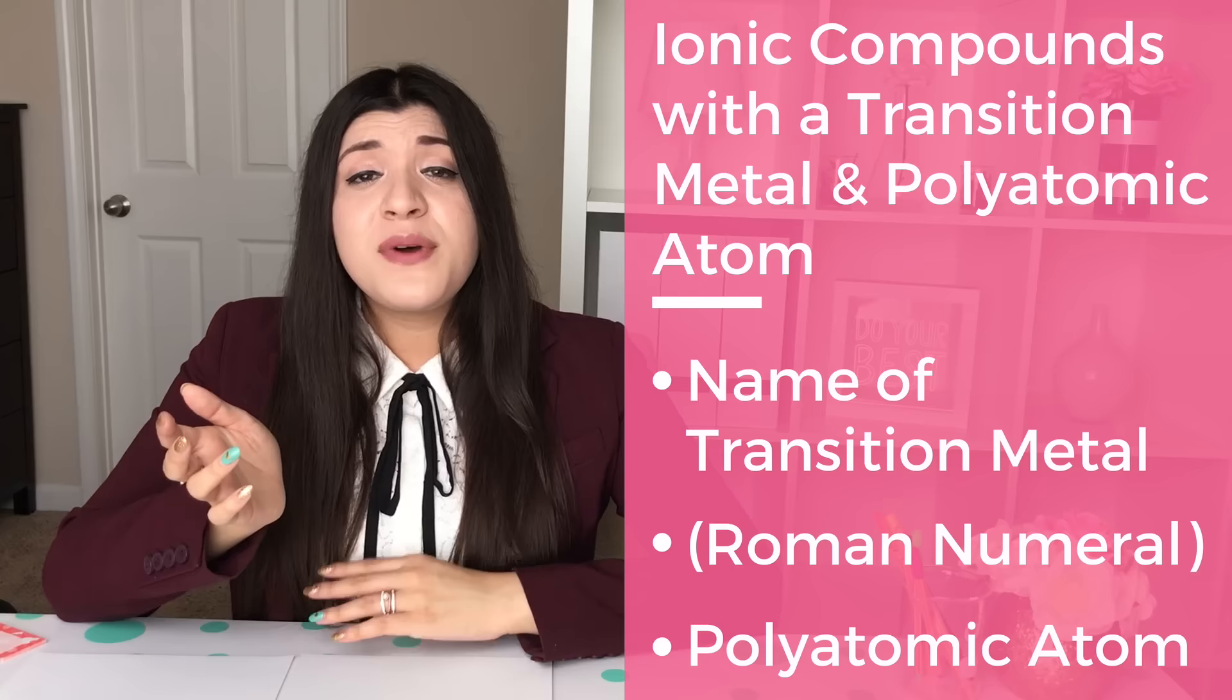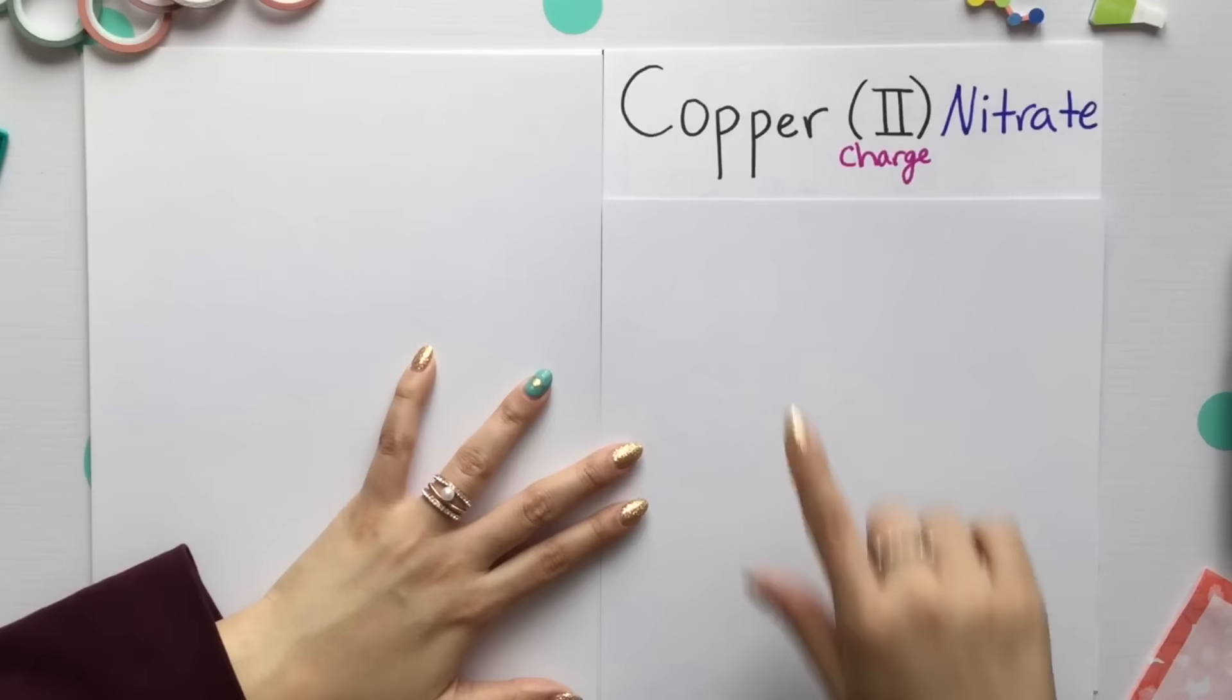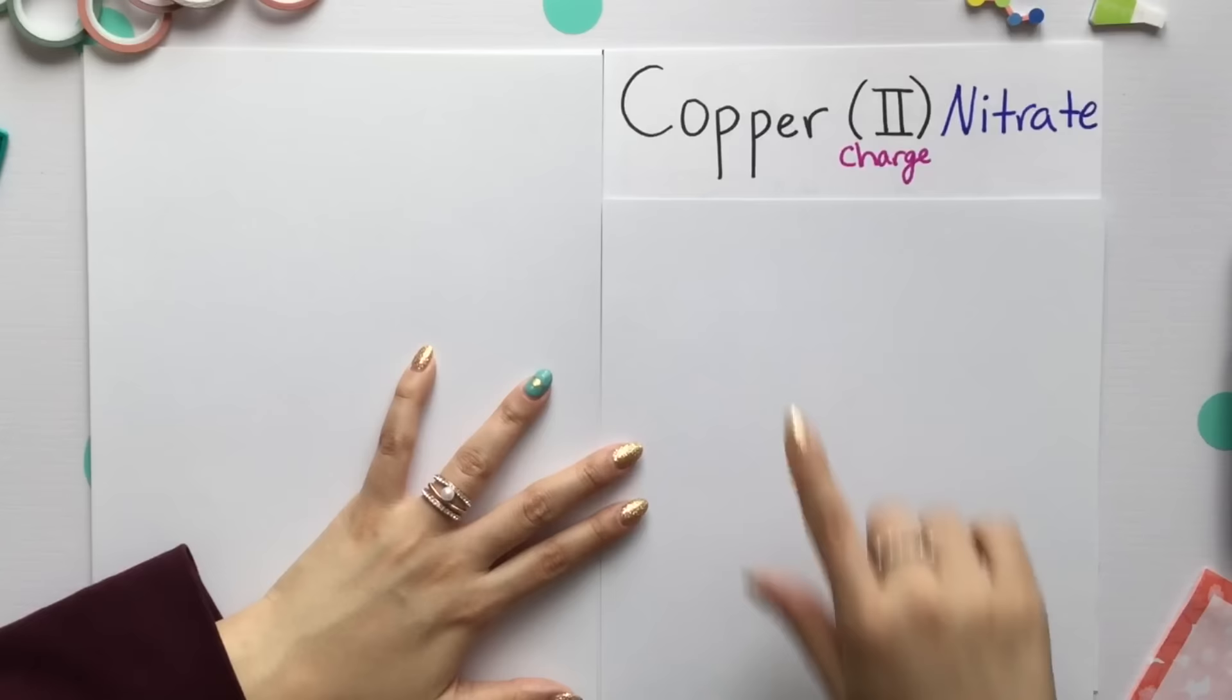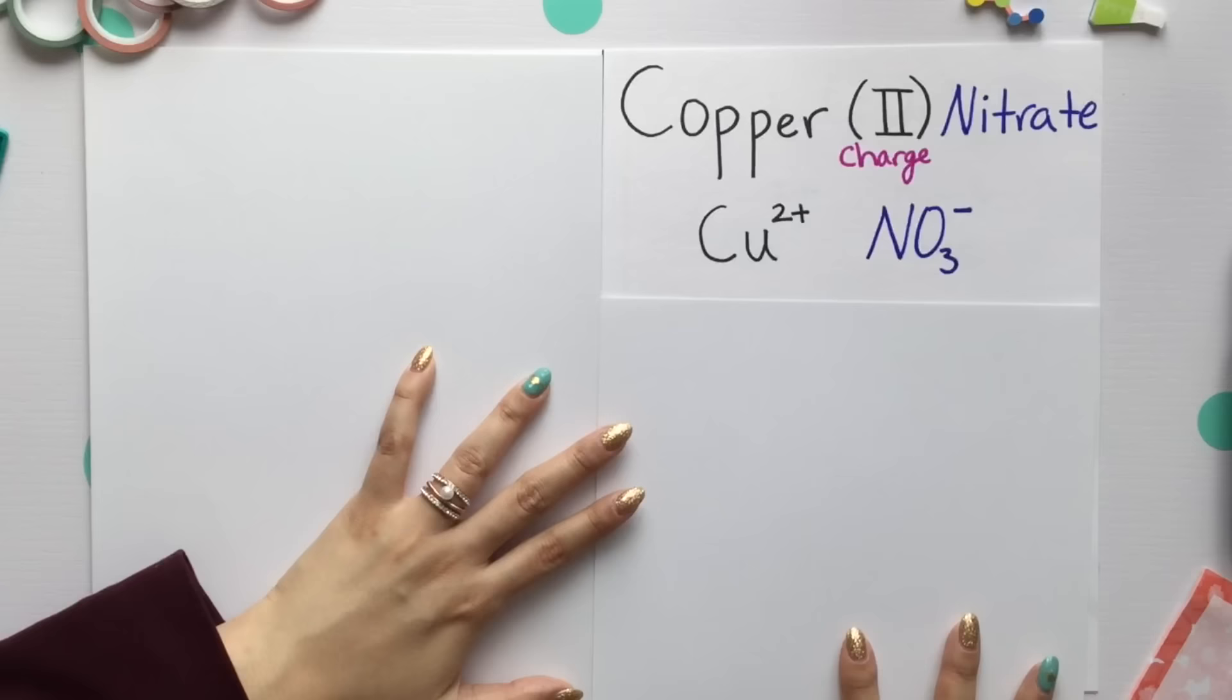Our last ionic compound mixes transition metals and polyatomic atoms. It consists of the name of the transition metal, a Roman numeral, and the polyatomic atom. Here we'll see copper 2. That 2 tells us the charge of copper, which is our transition metal, and our polyatomic atom of nitrate.